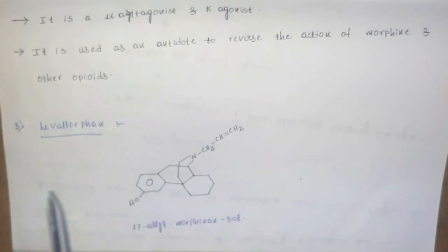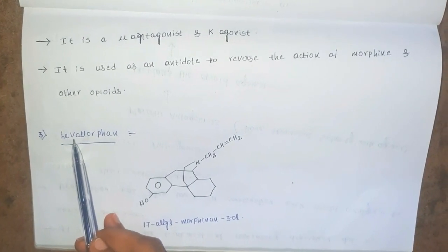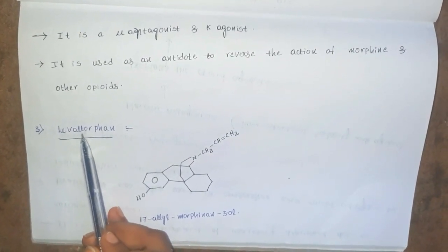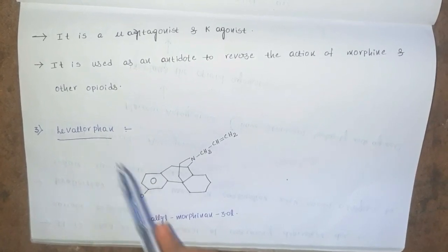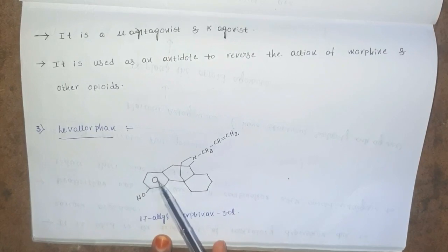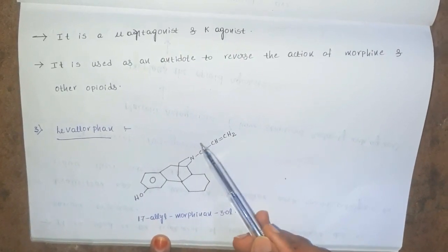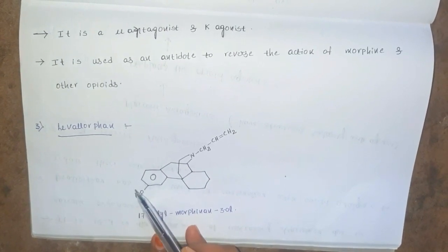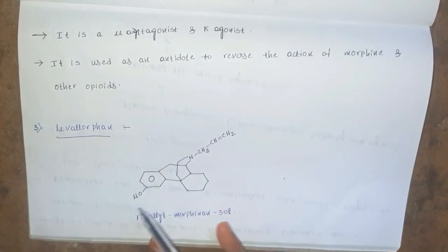The last structure is levallorphan. L-E means levo form; L means allyl group at the nitrogen; morphine means it contains a morphine moiety. This is the morphine ring structure. It contains an allyl group at the 17th position and an OH group at the 3rd position. This is called as levallorphan.